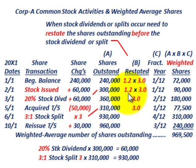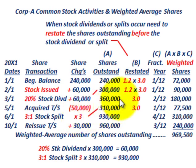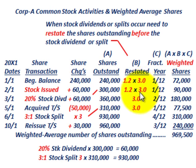We also have the 3-for-1 stock split on June 1st. Everything prior to June 1st — from the beginning balance through May 1st — has to be restated again by multiplying by 3. So the beginning balance gets multiplied by 3, the stock issued gets multiplied by 3, the stock dividend shares get multiplied by 3, and the treasury stock acquisition shares also get multiplied by 3.